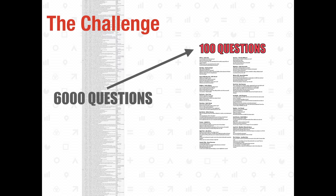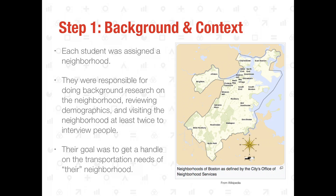We obviously can't make 6,000 animated GIFs, so our task was to have a design and learning process that would help us meaningfully and fairly represent the concerns of different neighborhoods, but compress the data set down to just 100 questions. This was a four-step process. The first step was that each student got a neighborhood — there was conveniently the right number. Each student was responsible for doing background research, collecting demographics, visiting the neighborhood, and interviewing people at least twice, to understand the transportation needs there.